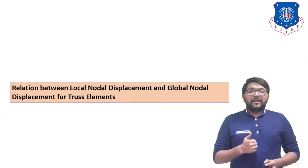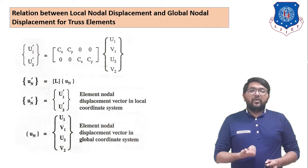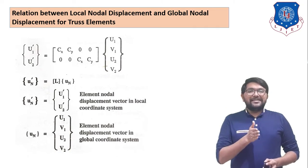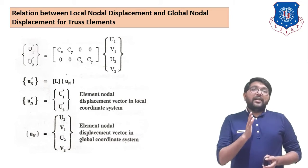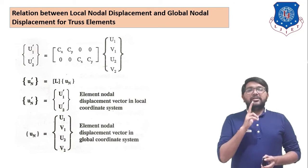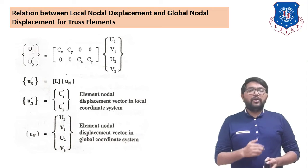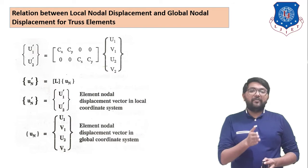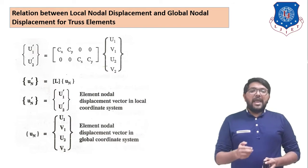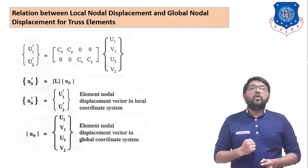The relationship between local nodal displacement and global nodal displacement for truss element is: u1' u2' is equal to [Cx, Cy, 0, 0; 0, 0, Cx, Cy] times u1, v1, u2, v2. We already derived this equation in our last session. This truss member is in two dimensions, that's why displacement occurs in two dimensions.